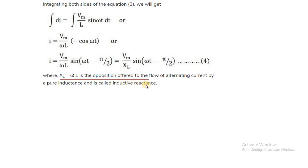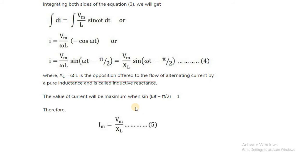In a pure resistive circuit, Im equals Vm upon R, where R is the opposition offered to the flow of current. Whereas in a pure inductive circuit, Im equals Vm upon XL. XL is also called the opposition offered to the flow of alternating current by an inductor. As it is opposition offered, it is called a reactance — instead of the term resistance, it is called reactance. This reactance offered by an inductor is called the inductive reactance.